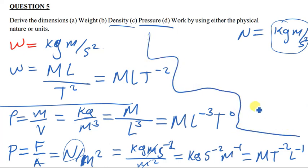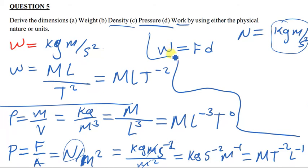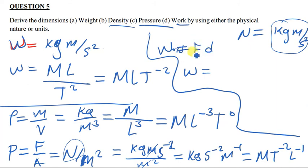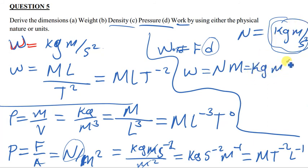Let's quickly move on to work. Work is equal to force times distance. The units for force are simply just Newtons, and distance is simply just the displacement, which is in meters. One Newton is equivalent to kg·m·s⁻², so per second squared is the same as seconds to the power negative 2.